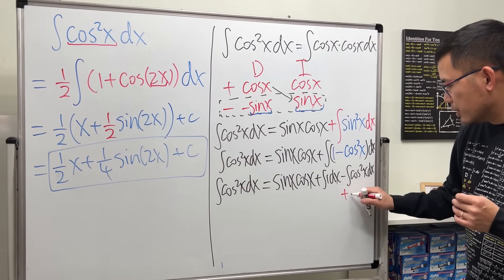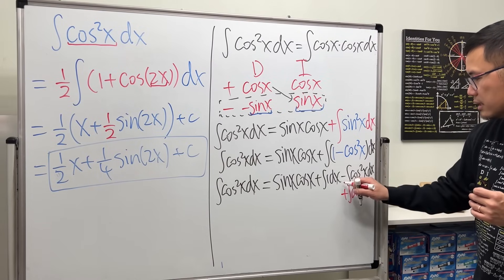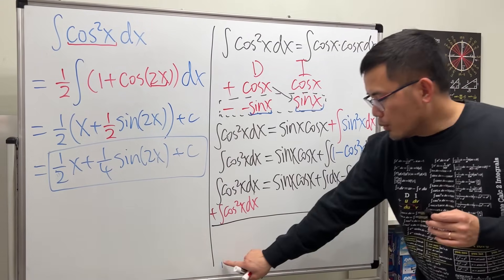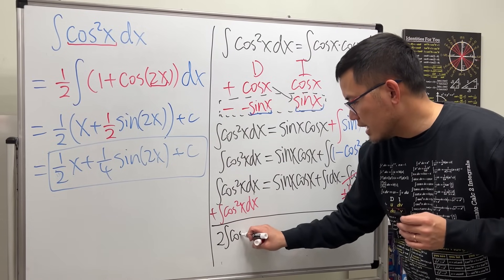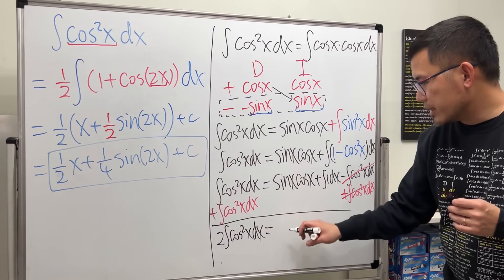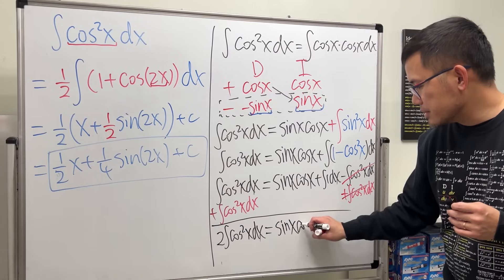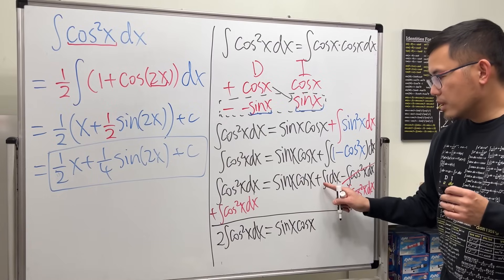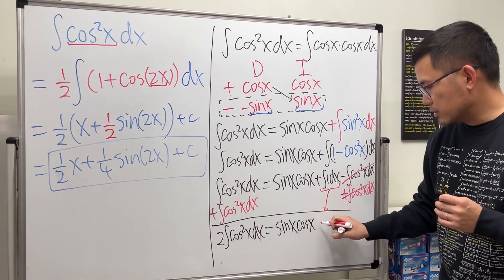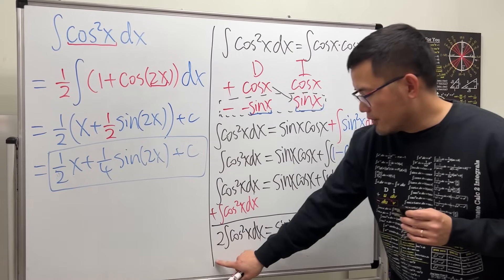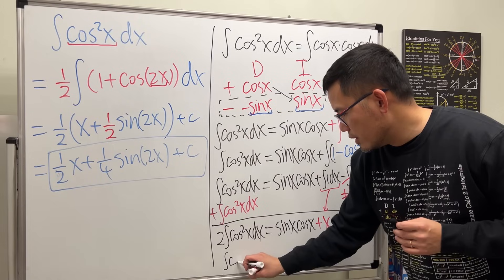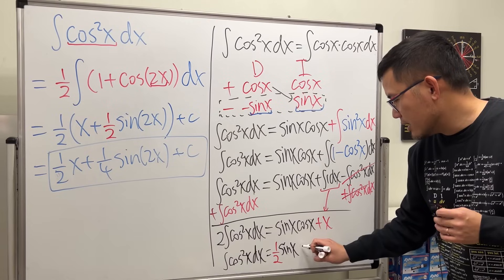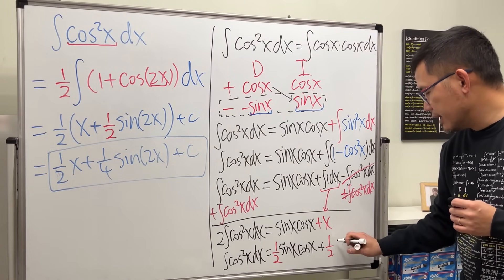To finish this, add the integral of cosine squared x to both sides — they cancel on the right. Now we have two times the integral of cosine squared x dx, which equals sine x times cosine x plus x. Don't forget the integral of 1 is x. Dividing everybody by two, the integral of cosine squared x dx equals one half sine x cosine x plus one half x plus C.